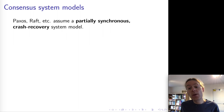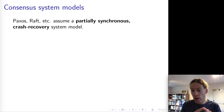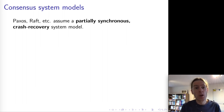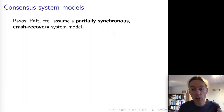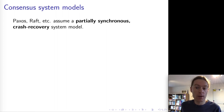Remember from lecture two we talked about different system models, and this becomes very important when talking about consensus. When discussing node behavior we could choose between crash-stop, crash-recovery, or Byzantine, where nodes can behave arbitrarily maliciously. In terms of network we might assume fair loss, and in terms of synchrony we could assume an asynchronous, partially synchronous, or synchronous system. What Paxos, Raft, and all these popular consensus algorithms do is choose a partially synchronous crash-recovery system model.